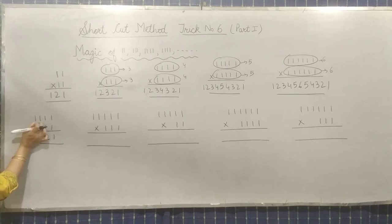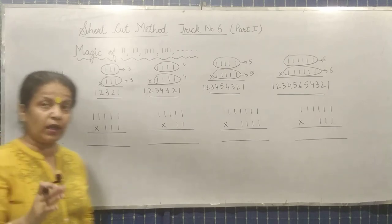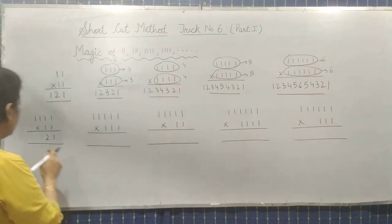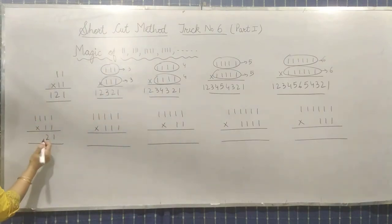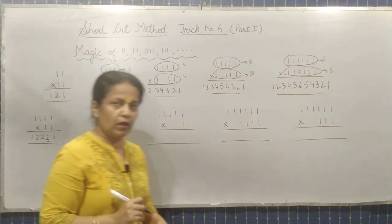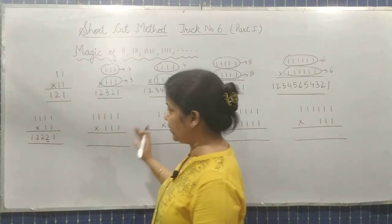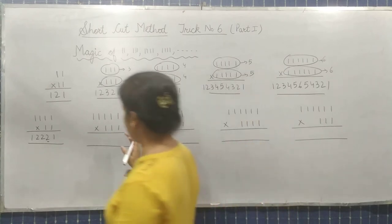And these two numbers remain. So what will you do? As many numbers remain, you will repeat that number. Okay? 2 and then 2. Now go in reverse order: 1. Okay? For better understanding, let's have a look for the other one.